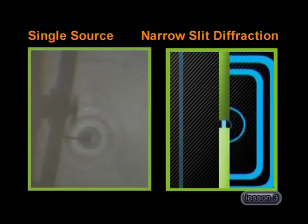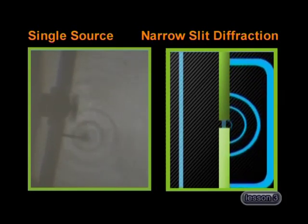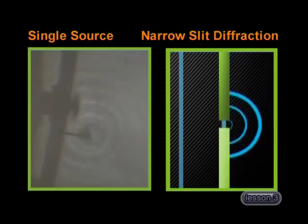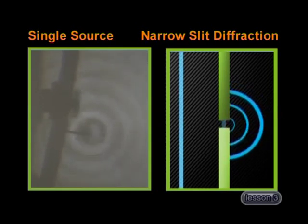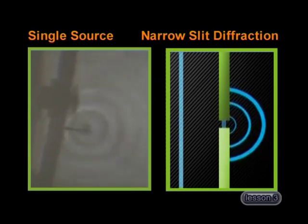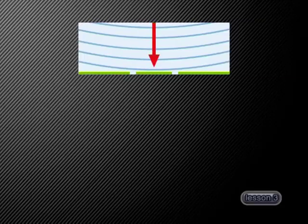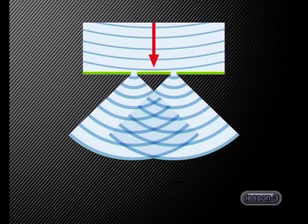Remember that when the width of a slit is narrow, the diffraction pattern observed is very similar to a single source. So we can think of very narrow slits as sources of waves. Let's represent the wave arriving at the two slits using a diagram. Each of these slits will act as a source of waves. These waves are diffracted as they pass through the slit and spread outward from the slit.